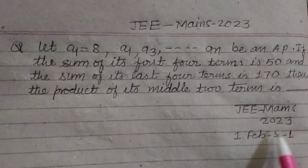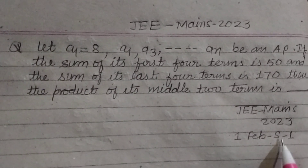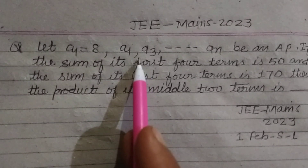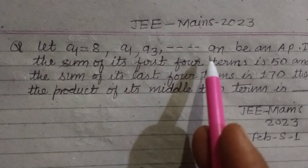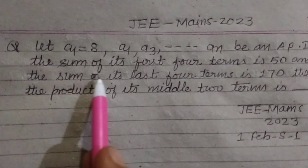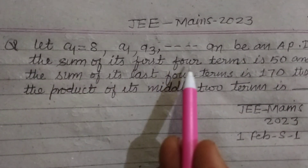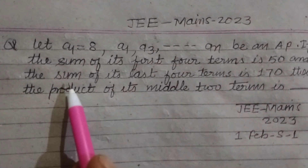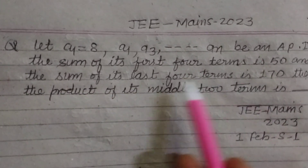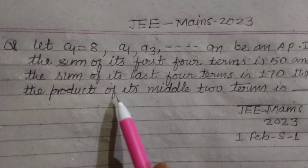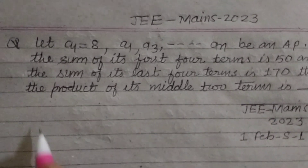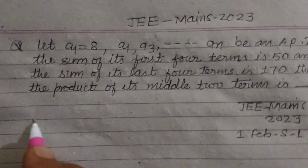Question from Jamais 2021: Let A1, A3, and so on form an AP. If the sum of its first four terms is 50, and the sum of its last four terms is 170, then find the product of the two middle terms.